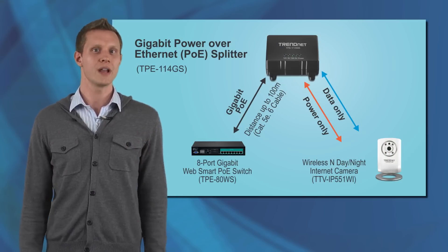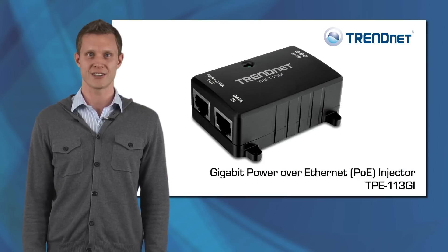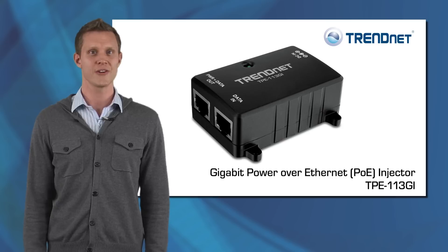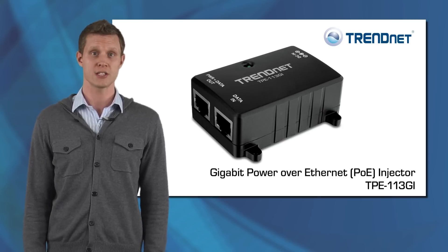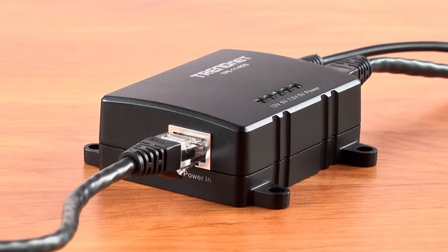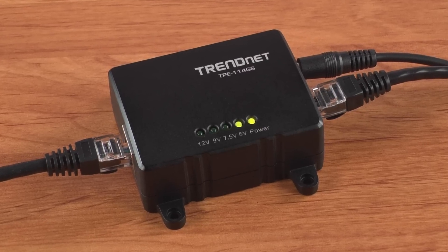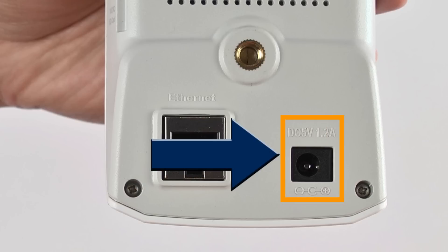If you don't have a PoE switch, you can use a TrendNet PoE injector such as the TPE113GI to supply a gigabit PoE connection. At the point of the IP camera installation, connect the PoE line to the data power-in port on the splitter, and confirm the voltage on the toggle switch matches the voltage on the device.